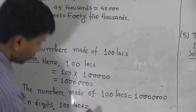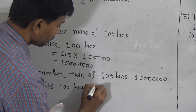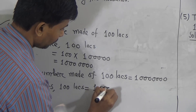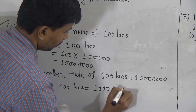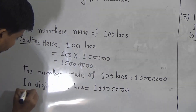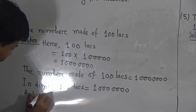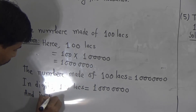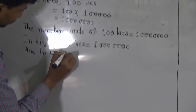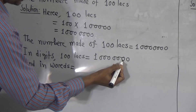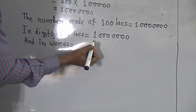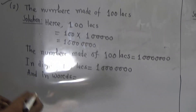100 blocks equal to what? Ones, tens, hundreds, thousands — that means 1 crore right now.